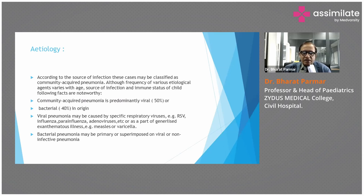Community-acquired pneumonia is predominantly viral, with a prevalence of 50%. Bacterial pneumonia accounts for 40%. Viral pneumonia may be caused by specific respiratory viruses such as respiratory syncytial virus, influenza, parainfluenza, adenovirus, and as part of generalized exanthematous illness such as measles or varicella. Bacterial pneumonia may be primary or superimposed on a viral or non-infective pneumonia.